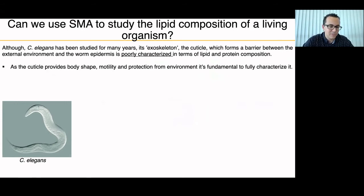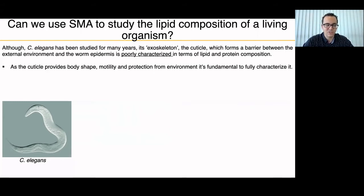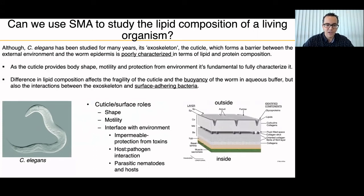Something like C. elegans — which has been studied for 40-50 years, and is one of the first organisms with a completely decoded genome. Its exoskeleton, called the cuticle, forms a barrier between the organism and the external environment and is poorly characterized in terms of lipid and protein composition. The cuticle provides body shape, motility, and protection. It can change in response to pathogen infection, and the buoyancy of the worm can be affected by changing the lipid composition.